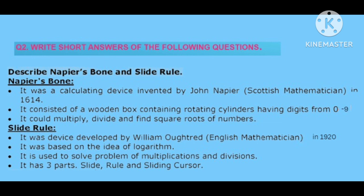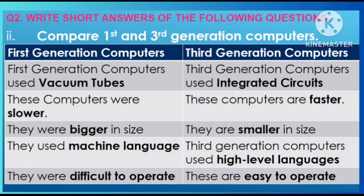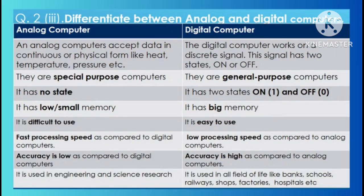Question two: compare the first and third generation of computers. Here you are supposed to compare these two generations of computers. Next part: differentiate between analog and digital computers — you will write the differences between these two types of computers.